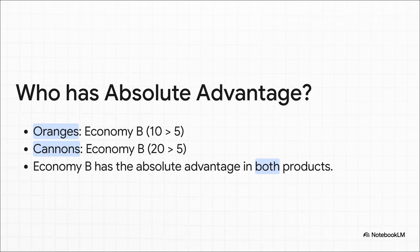So you look at those numbers and, I mean, it's a no-brainer, right? Economy B makes more oranges and it makes way more cannons. So it has the absolute advantage in both. It's just better at making everything.